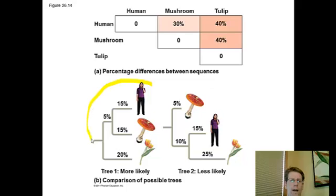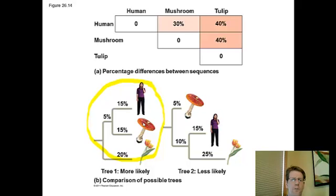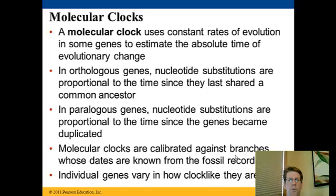Going back to the example about mammals, fungi, and green plants: on first inspection you'd think fungi are more closely related to plants. But examining DNA, the percent differences in DNA sequences actually put mushrooms branching off much more likely with mammals, compared to a more distant common ancestor with green plants. As you look at this example, you can see we're not always getting a constant rate of evolutionary change.